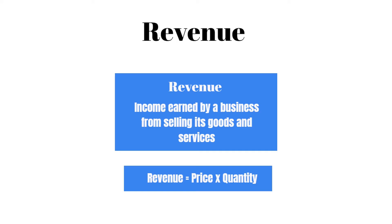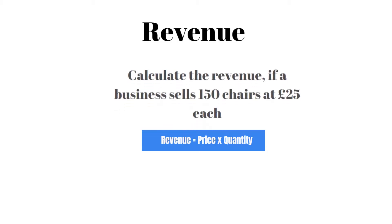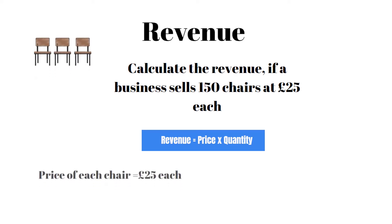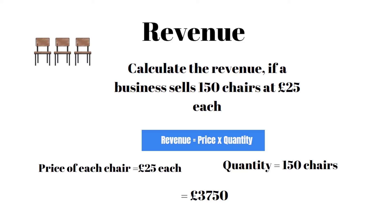Let's have a look at a calculation. Remember that revenue equals price times quantity. Calculate the revenue if a business sells 150 chairs at £25 each. The price of each chair is £25 and there are 150 chairs. If you'd like to pause the video now and work out this calculation, you can do so. The answer you should have is £3,750 — and hopefully you remembered to include the pound sign as well.